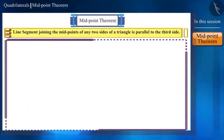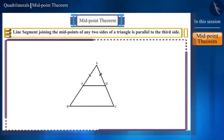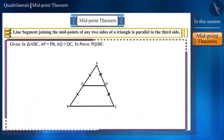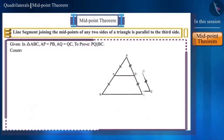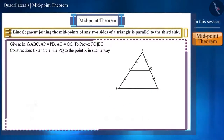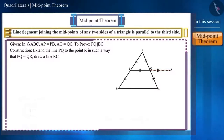Now, we draw a figure with the help of the statement. In triangle ABC, the midpoints of the sides AB and AC are P and Q respectively. This is given to us. We have to prove that the line segment PQ is parallel to the side BC. We make a construction: extend the line PQ to the point R such that PQ equals QR, and join R and C.